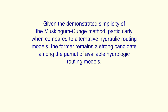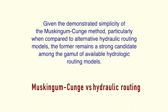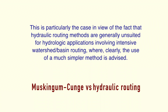Given the demonstrated simplicity of the Muskingum-Cunge method, particularly when compared to alternative hydraulic routing models, the former remains a strong candidate among the gamut of available hydrologic routing models. This is particularly the case in view of the fact that hydraulic routing methods are generally unsuited for hydrologic applications involving intensive watershed basin routing, where clearly the use of a much simpler method is advised.